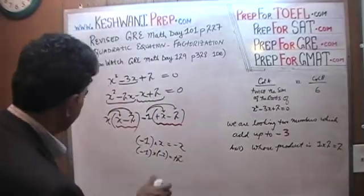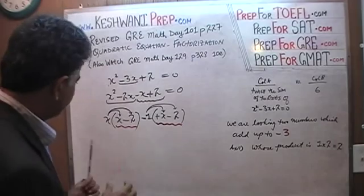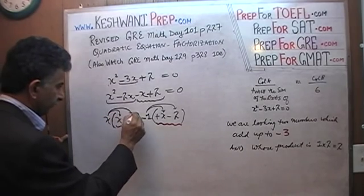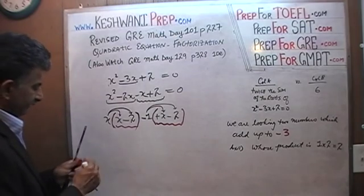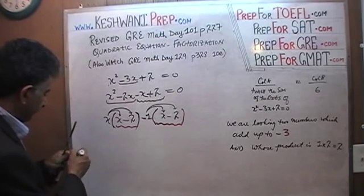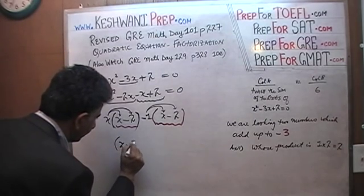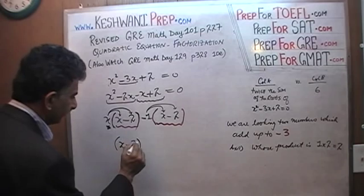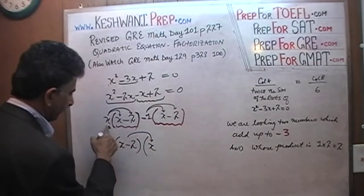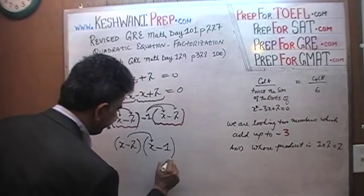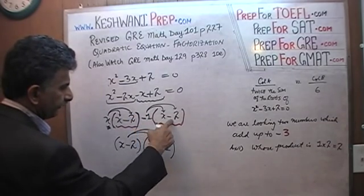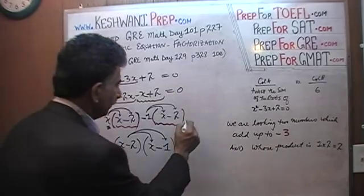Now we have x(x − 2) − 1(x − 2) = 0. Both terms share the common factor (x − 2). Taking (x − 2) out: (x − 2)(x − 1) = 0.